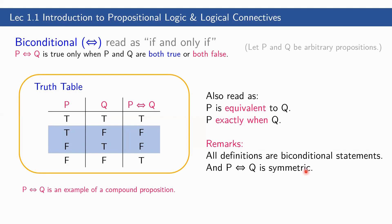Last, we have the biconditional, read as 'if and only if.' P if and only if Q is true only when P and Q are both true or both false. This is also read as 'P is equivalent to Q' or 'P exactly when Q.' All definitions are biconditional statements. P if and only if Q is symmetric — meaning it is the same as Q if and only if P. The truth table: it is only true when P and Q are both true or both false.